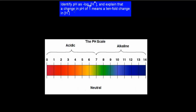We haven't really defined pH yet — what pH actually is. This is what this video is all about: a quick definition of pH. The dot point itself says: identify pH as minus log of the hydrogen concentration, and explain that a change in pH of 1 means a tenfold change in the concentration of hydrogen.